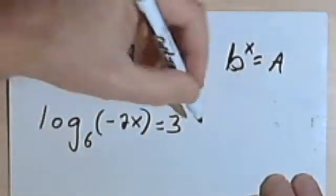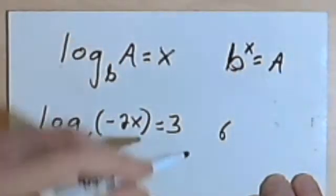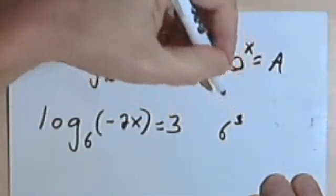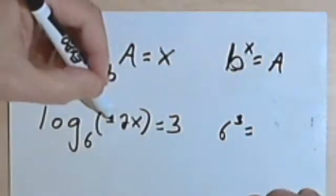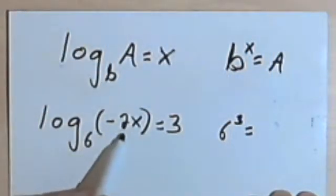So I'm gonna take that base, which is 6, raise it to the third power, 6 to the third power, equals this argument in here, negative 2x.